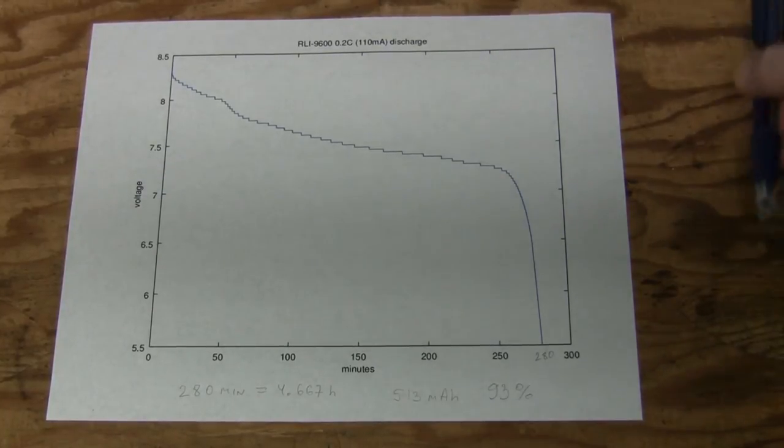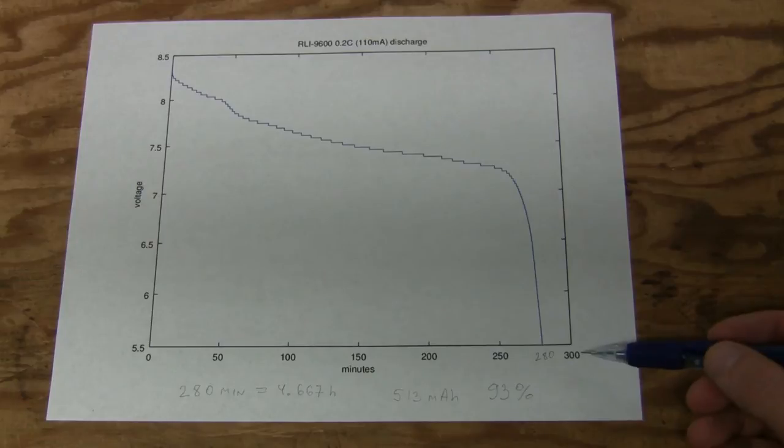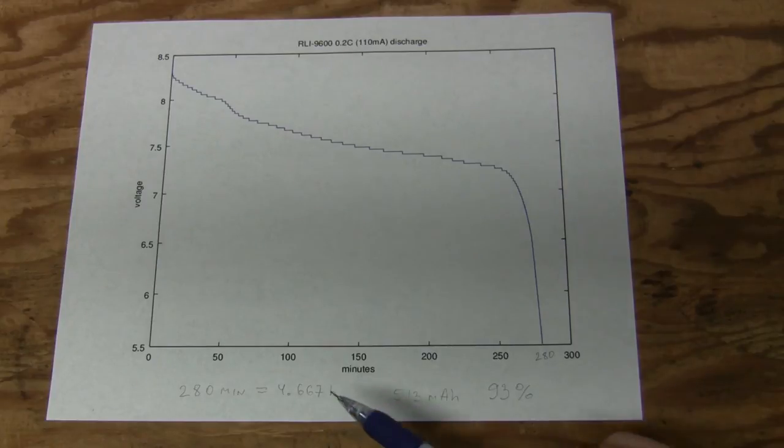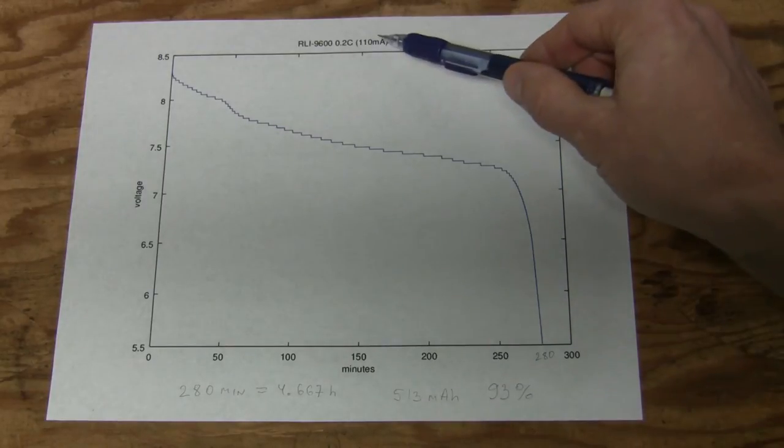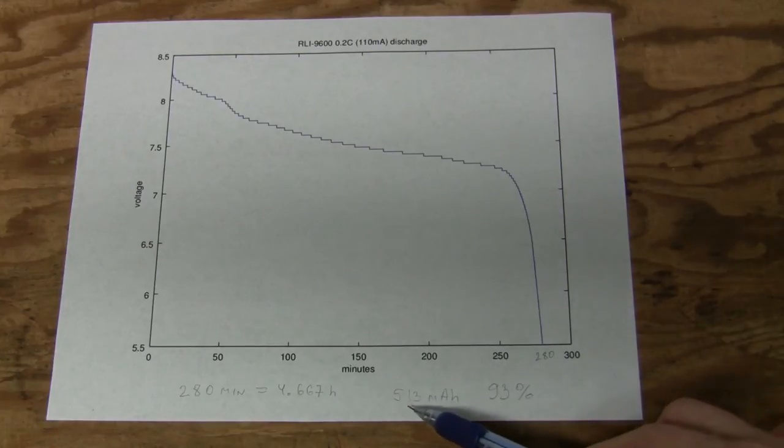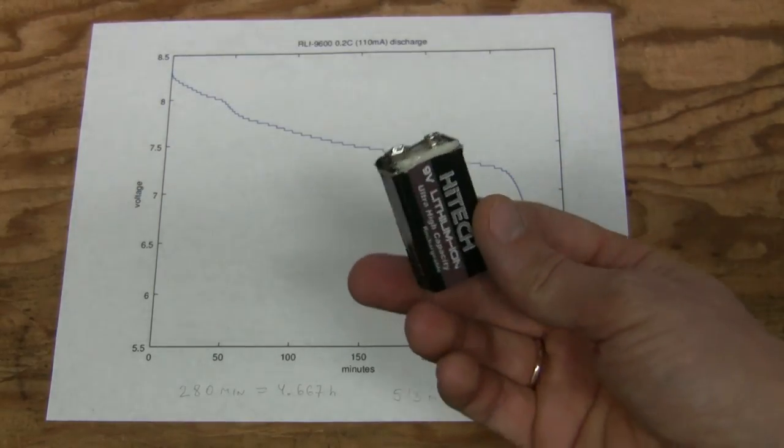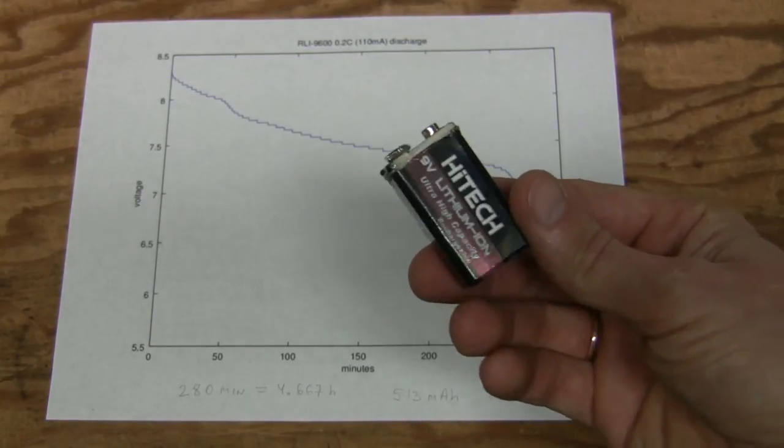Here is the result of our experiment. It didn't last 300 minutes, but almost. It lasted 280 minutes, which is 4.667 hours. Multiply that by 110 milliamps, it gives us 513 milliamp hours, which is 93% of that rated 550 milliamp hours nominal capacity. Not bad at all, considering that I have no idea how old this thing is and how it was used.